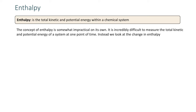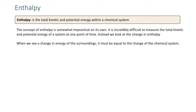Instead, we look at the change in enthalpy. We see that the change in enthalpy of the surroundings must be equal to the change in the chemical system. That's where we use the formula delta H equals Q, where Q represents the water — the change in the water — and delta H is the change in the chemical reaction taking place.